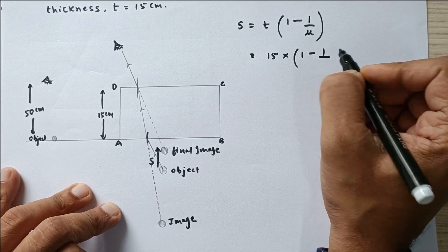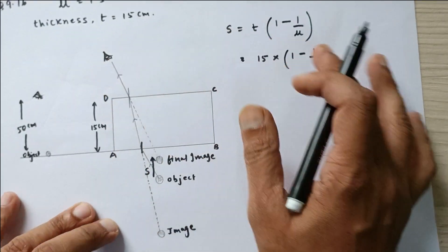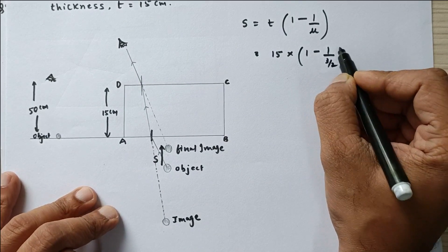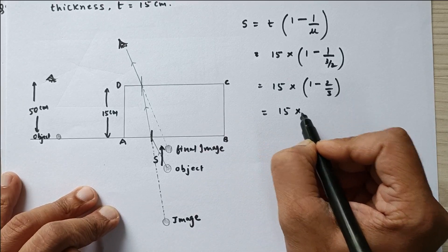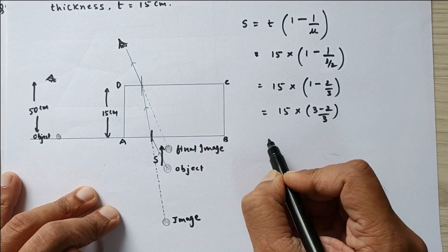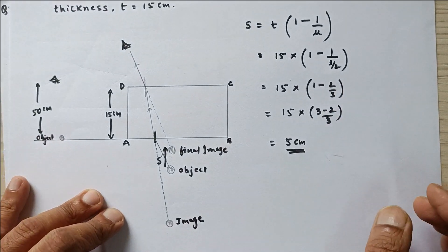Then this is 1 minus 1 upon refractive index of the glass is 1.5 which is already given. So I am going to write this as 3 by 2. So 5 centimeters is the answer.